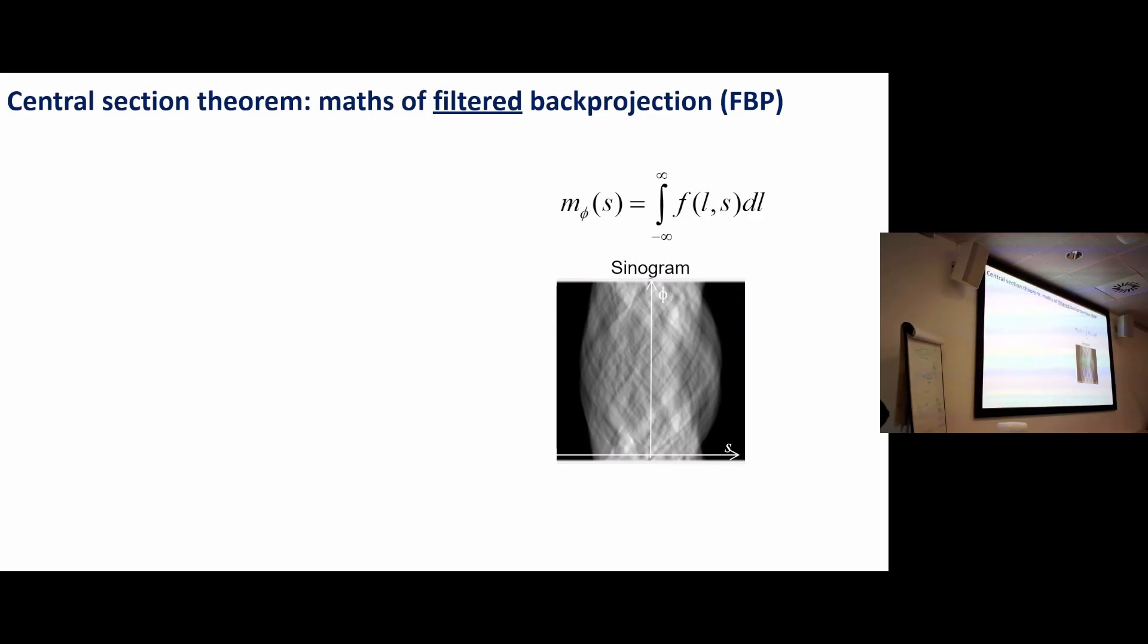There again is our 2D object defined in a 2D coordinate system LS, and we're taking line integrals to get m phi s, we've already shown you that picture. There is a sinogram with the coordinate s and the angle phi, so we're just collecting parallel projections.